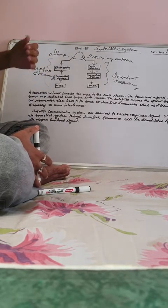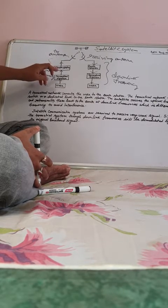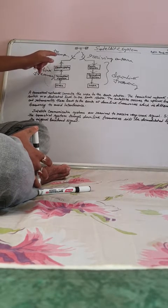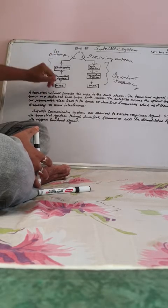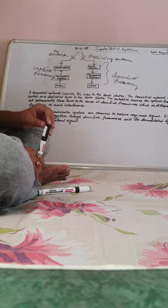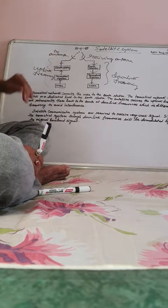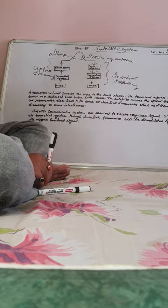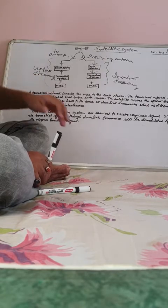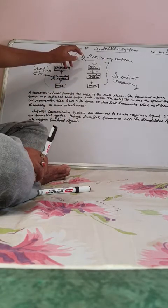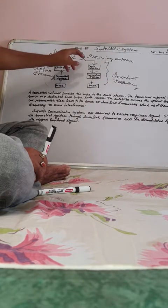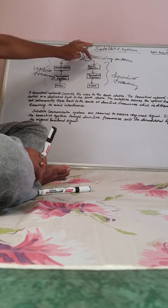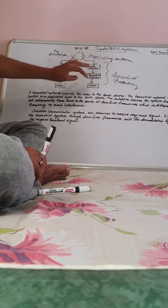The terrestrial network is a telephonic network or a dedicated link connected to the earth station. The signal is sent by the user to the terrestrial system. The earth station receives the signal at an uplink frequency, then sends it to the transmitting antenna. The transmitting antenna sends the signal to the satellite, which amplifies it and transmits it back at a downlink frequency which is different from the uplink frequency to avoid interference.